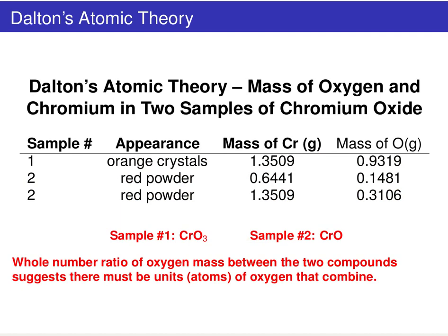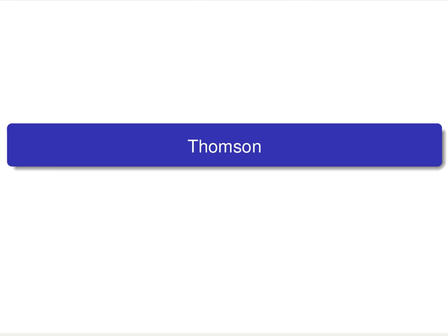So Dalton gives us this idea and experimental evidence to back it up: atoms exist, there are different types, and changes occur but we never destroy or create new atoms — we're just shuffling them around.